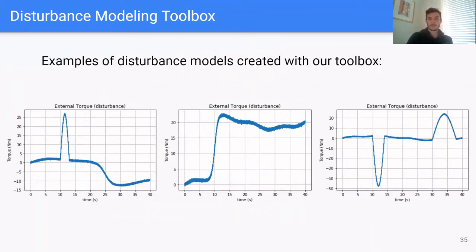Here are some examples of disturbance models created with our toolbox. On the left, we have a large gust on top of some sinusoid. In the middle, we have a large step accompanied with sinusoidal behavior. And on the right, we have two large gusts in opposite directions on top of low frequency sinusoid.